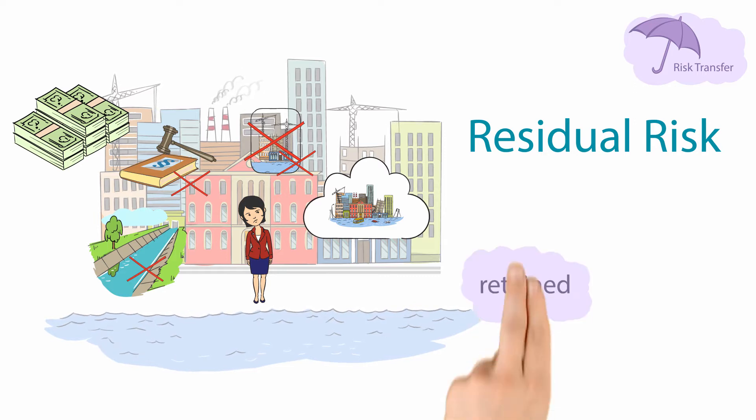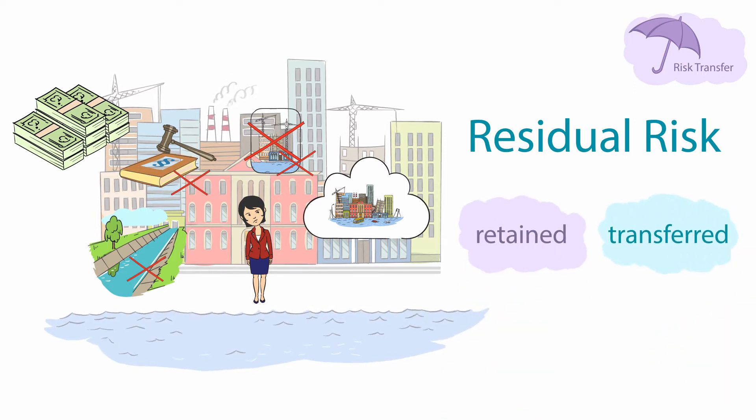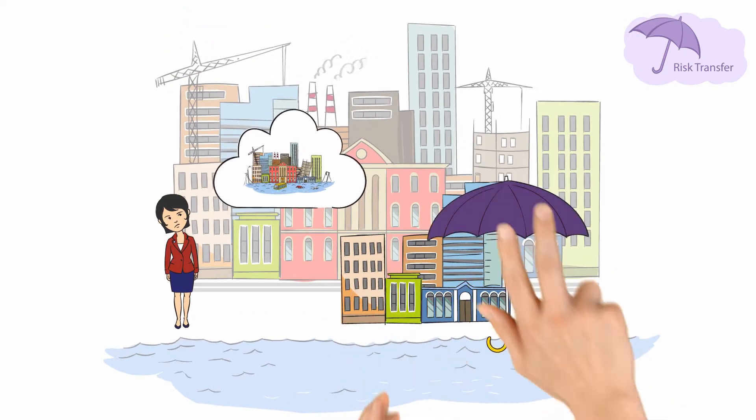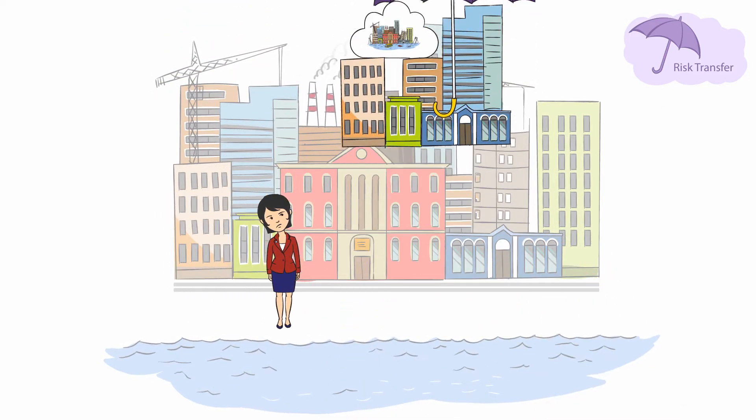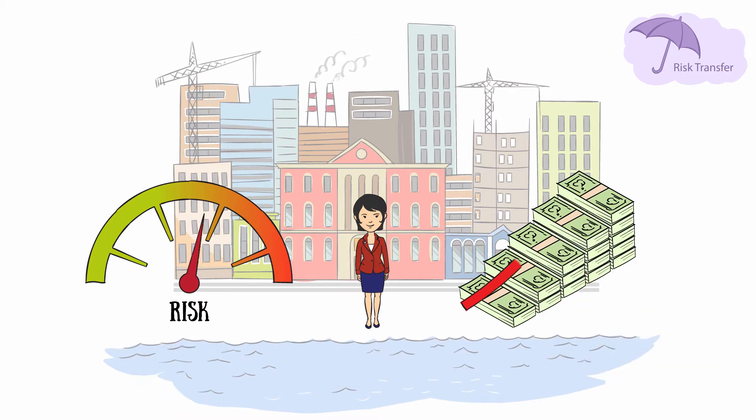This type of risk can be either retained or transferred. Emma has the possibility to transfer them to the insurance sector, which increases the financial stability of the city of Titinati.